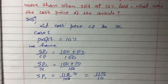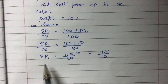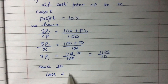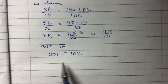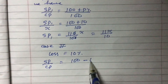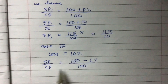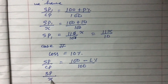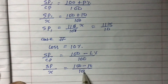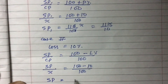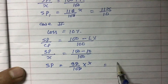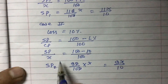Similarly, in Case 2 there is a loss of 10%. The formula is SP by CP equals (100 minus loss percent) divided by 100. So SP divided by X equals (100 minus 10) divided by 100. SP equals 90 by 100 times X, the zeros cancel, giving SP2 equals 9X by 10.